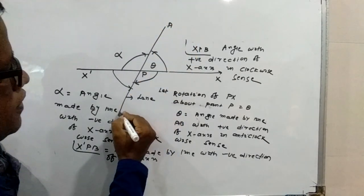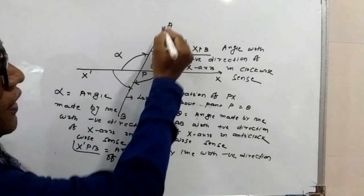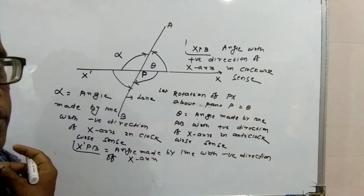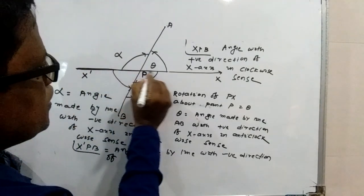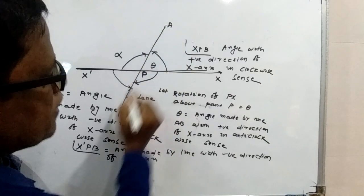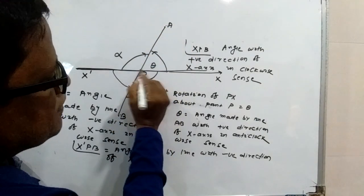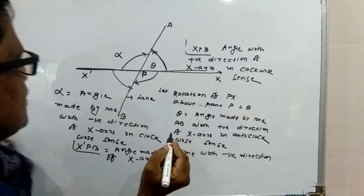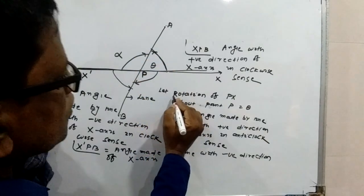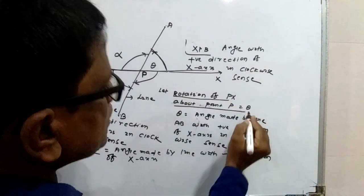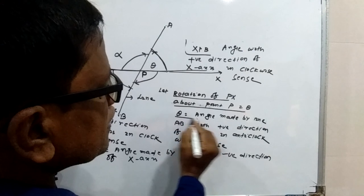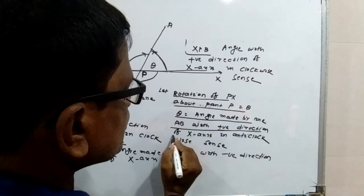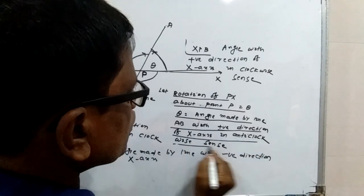Here, AB is a line. It is an oblique line. Let it cross the X axis at point B. Then we have four angles made by the line with the X axis. The angles are theta. Let here it is theta. Means rotation of PX about point B is equal to theta. And theta is the angle made by line AB with the positive direction of the X axis in anticlockwise sense.